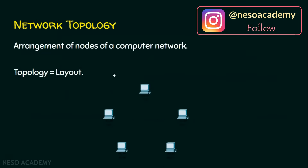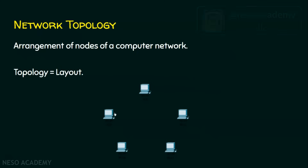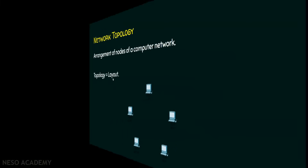Firstly, we will start with what is a network topology. We have some nodes and we have to arrange these nodes so that we can establish communication among all the nodes. Topology means the arrangement of nodes of a computer network, and it can be viewed as a layout of a computer network.